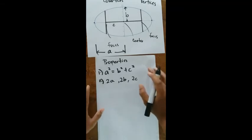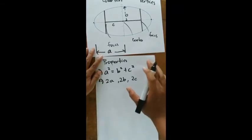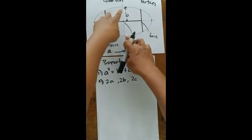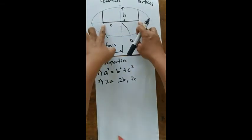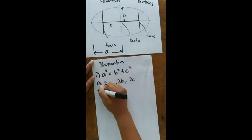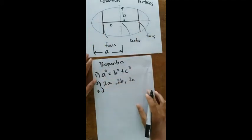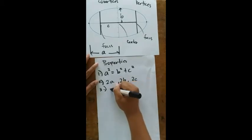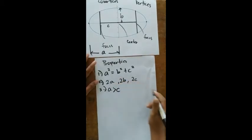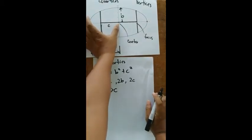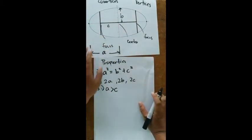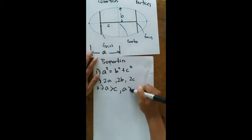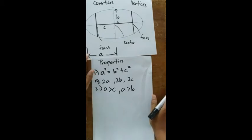The second property: remember that 2a is the length of the major axis, 2b is the length of the minor axis, and 2c is the length of the principal axis. Third, remember that a is greater than c, and a is also greater than b — since a is the longest length.